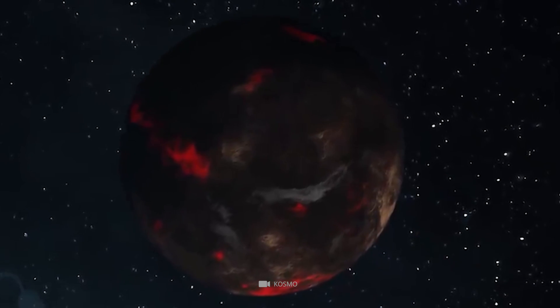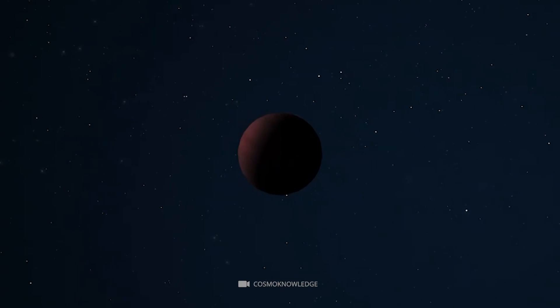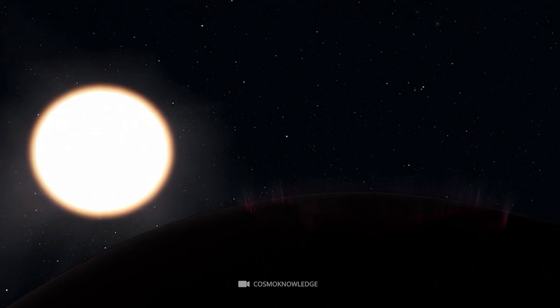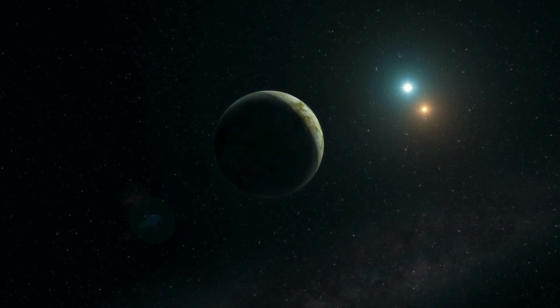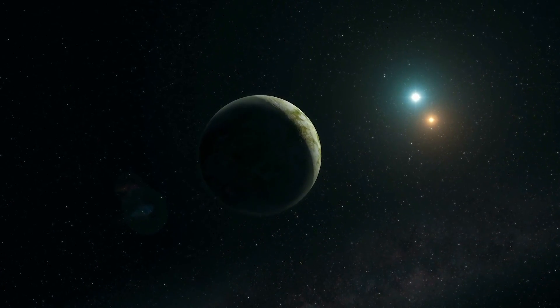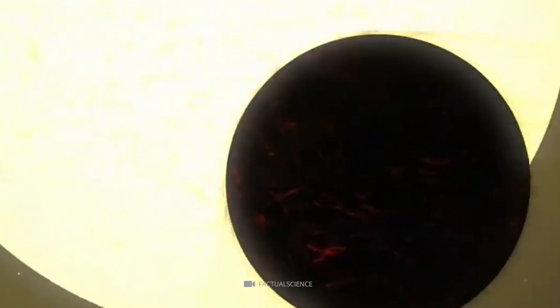One of TRES-2b's most remarkable characteristics is its extreme darkness. It reflects less than 1% of any light that strikes its atmosphere. This means that almost all energy it receives from its host star is absorbed, making it incredibly hot. Temperatures on the planet can reach up to 2,000 degrees Celsius.